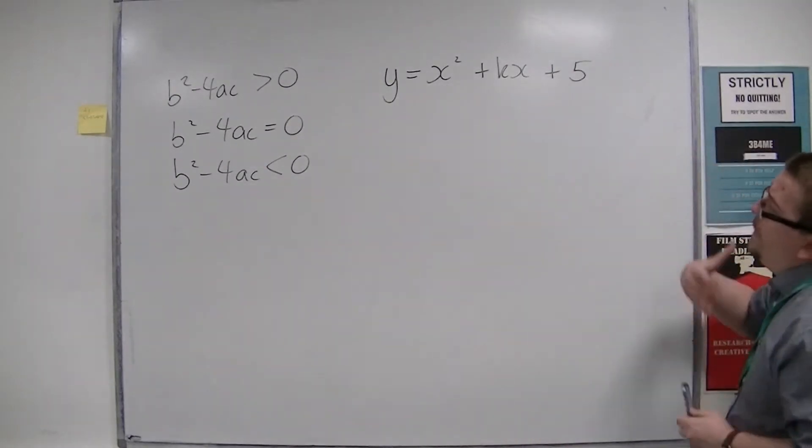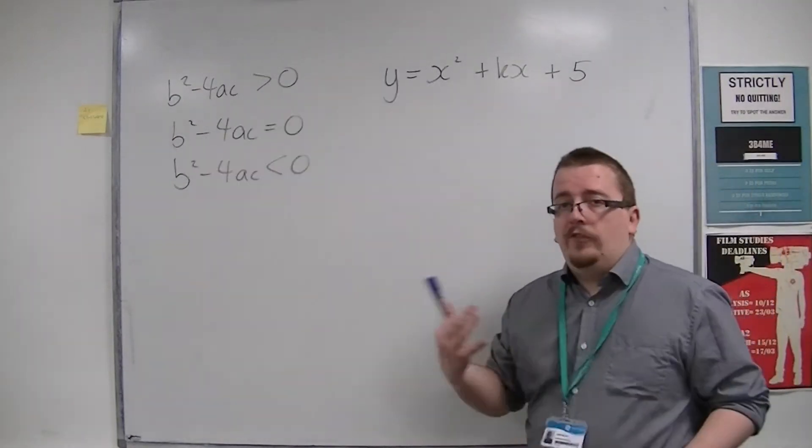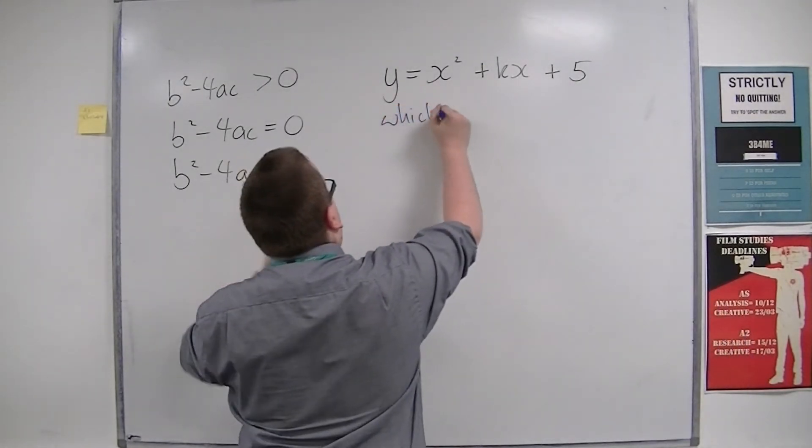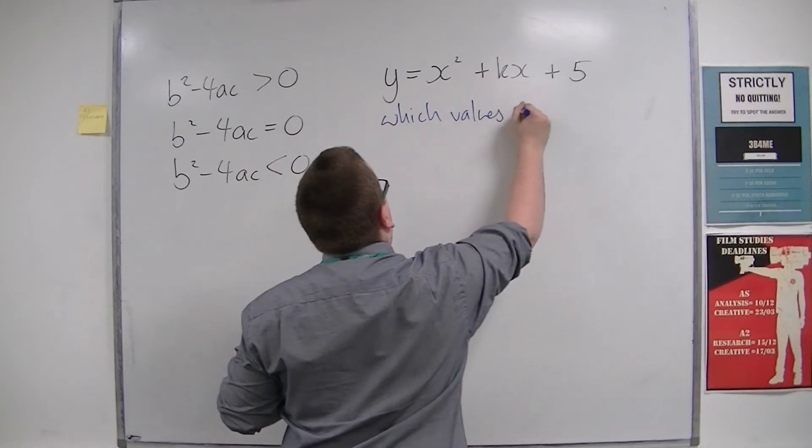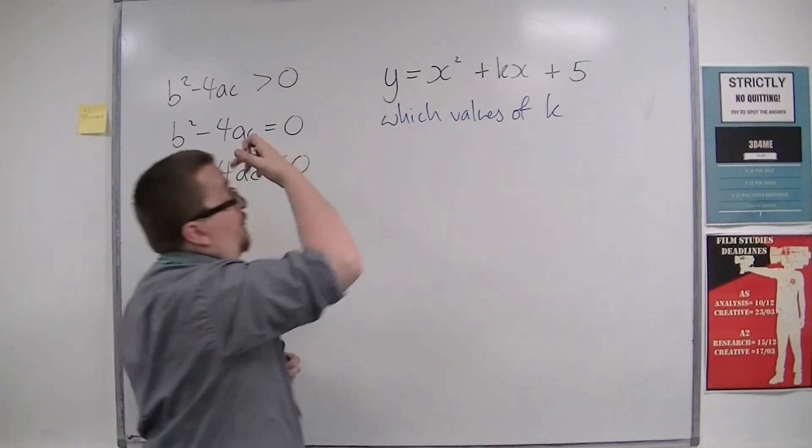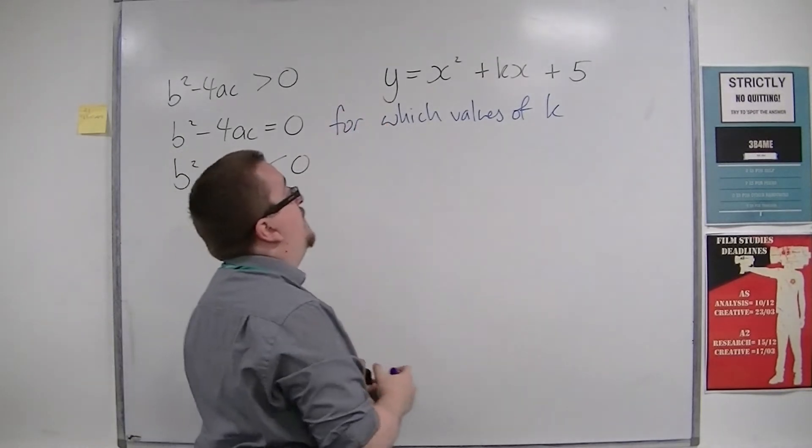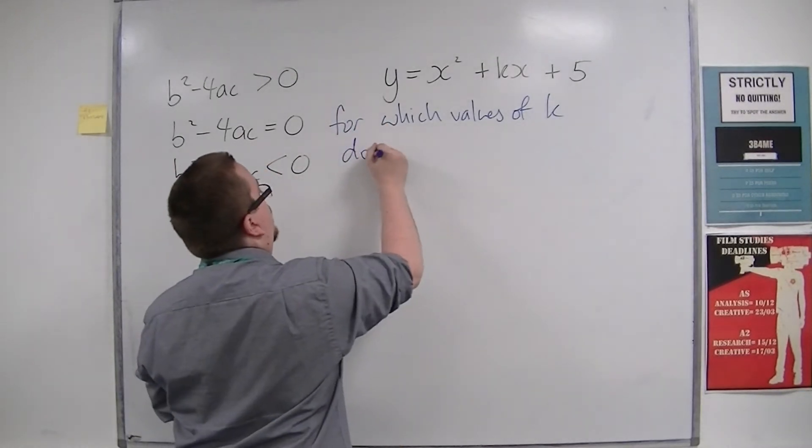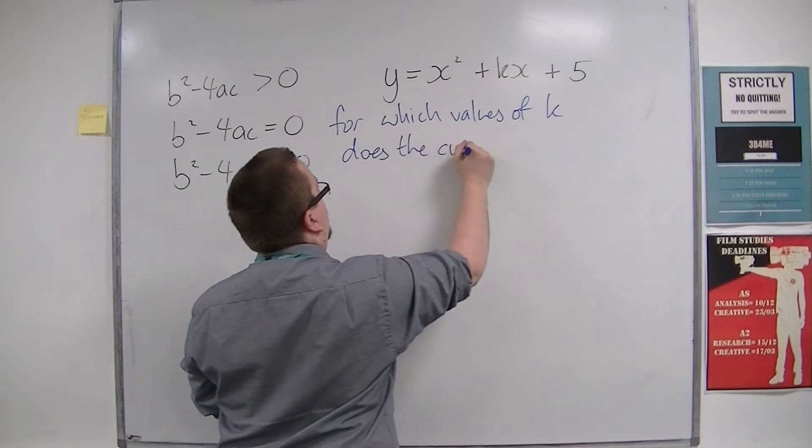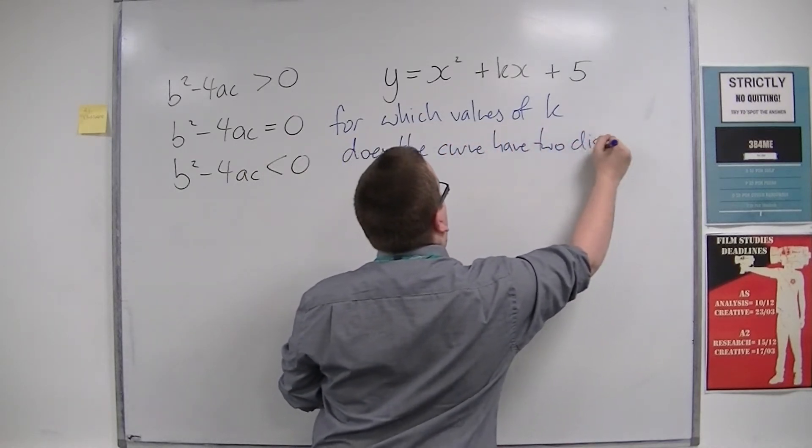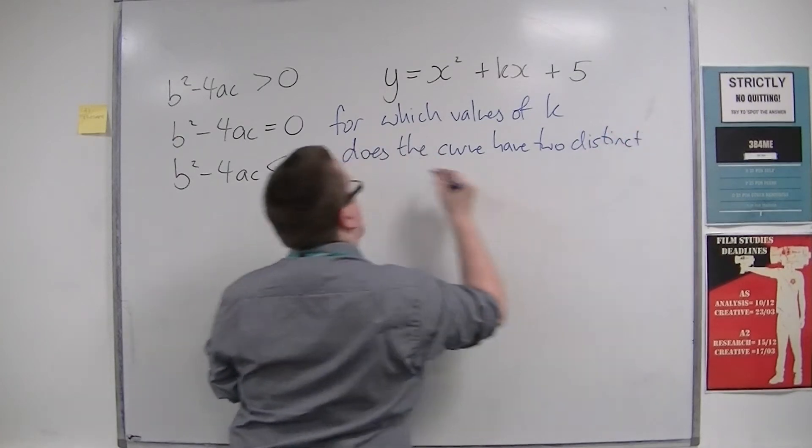And then you could say, for which values of k does the curve have two distinct real roots?